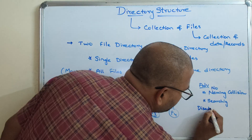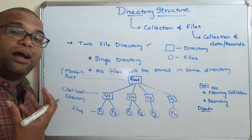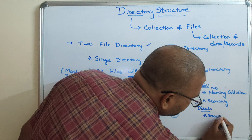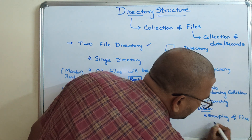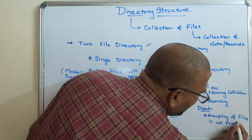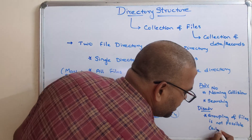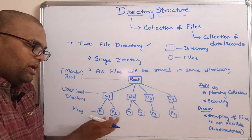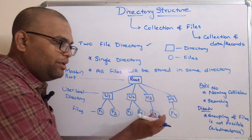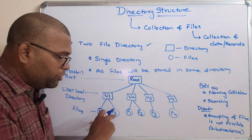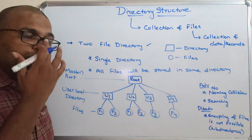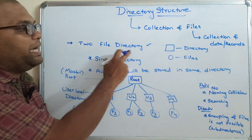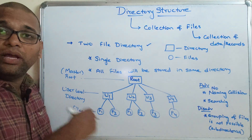The disadvantage of this two-level directory structure is that we can't group the files by creating subdirectories under a user's directory. User one will have only file one and file two, user two will have file one and file two, and so on — but under the user we cannot create subdirectories. So grouping similar files into subdirectories is not possible in two-level directory. In order to overcome this disadvantage we move on to the third one, that is tree structure.